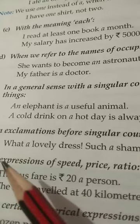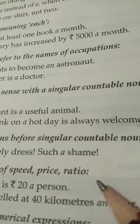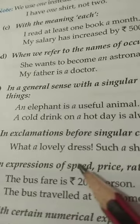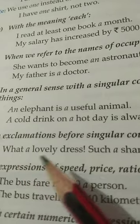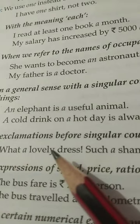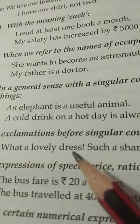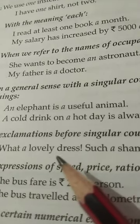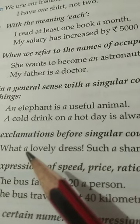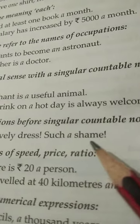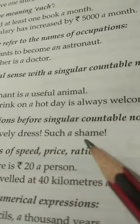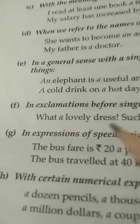Next condition: indefinite article is used in exclamations before singular countable nouns. Whenever we have an exclamation before a singular countable noun, we use an indefinite article. See the example: 'What a lovely dress!' — 'dress' is a single noun, so we use 'a'. Second example: 'Such a shame!'